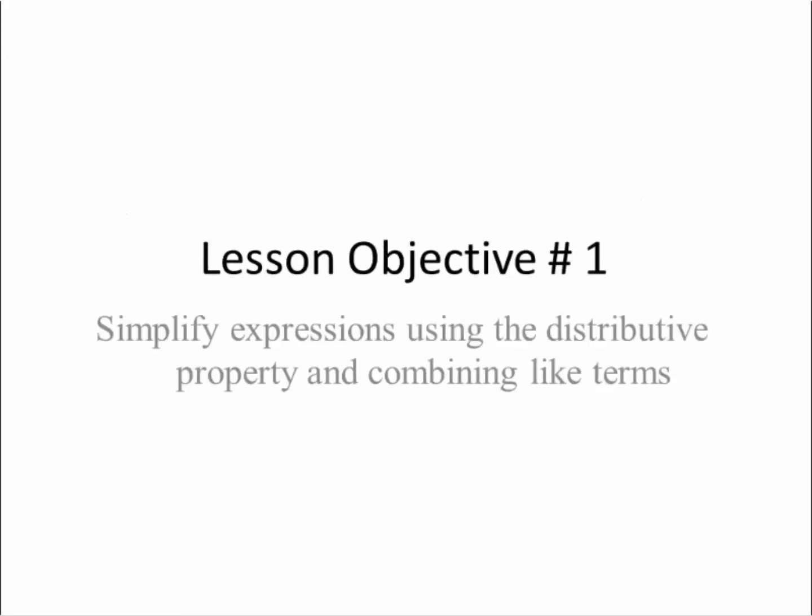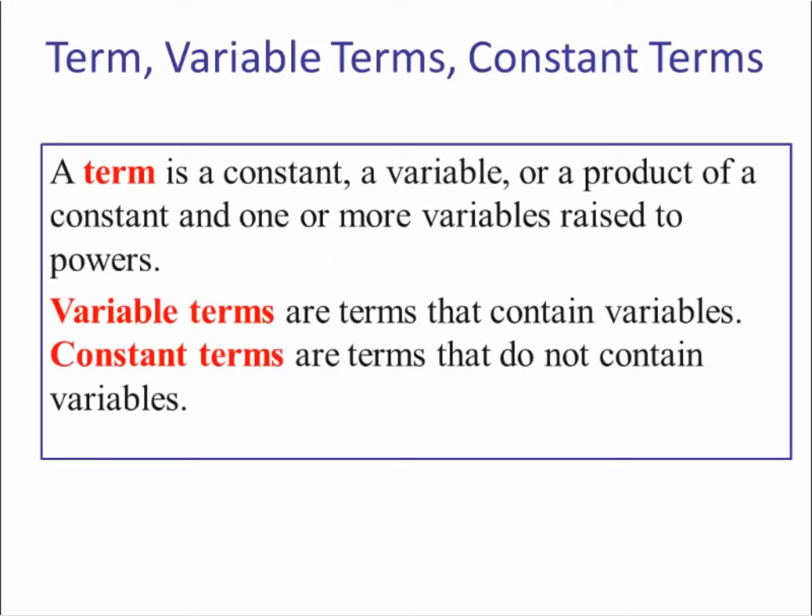Lesson objective number one. A term is a constant, variable, or a product of a constant and one or more variables raised to powers. Variable terms are terms that contain variables. Constant terms are terms that do not contain variables — these are terms that stay the same.